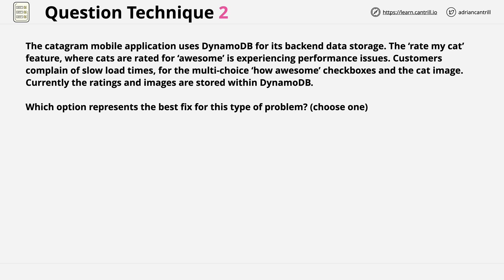The Catagram mobile application uses DynamoDB for its back-end data storage. The Rate My Cat feature, where cats are rated for awesome, is experiencing performance issues. Customers complain of slow load times for the multi-choice how awesome checkboxes and the cat image. Currently the ratings and images are stored within DynamoDB.